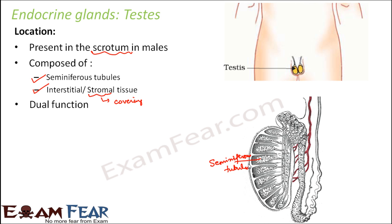The testes performs a dual function: it acts as the sex organ because it produces the male sex cells or male gametes called sperms, and it also acts as an endocrine gland which secretes hormones.